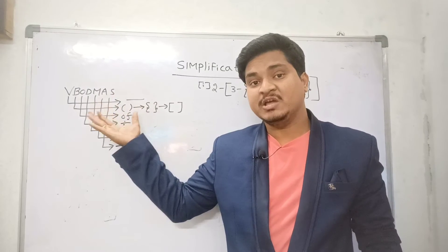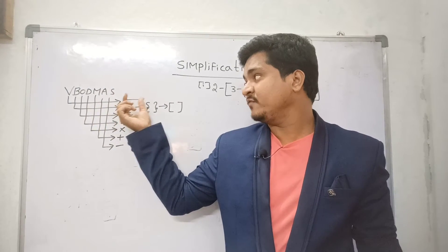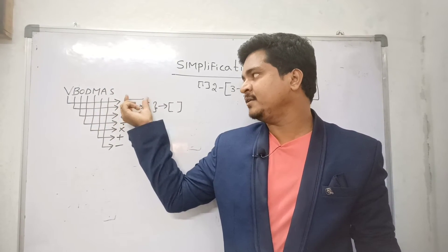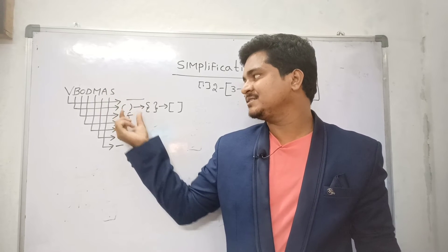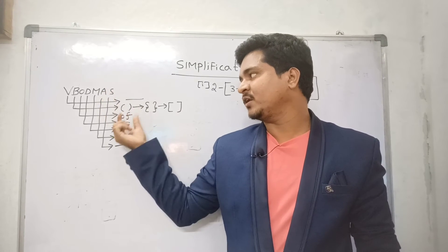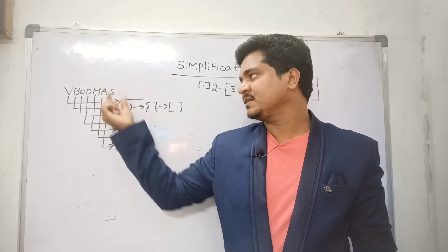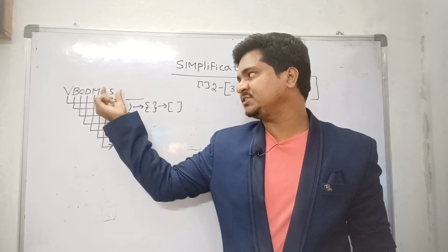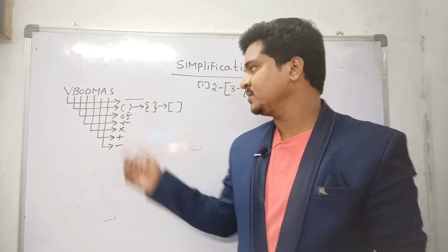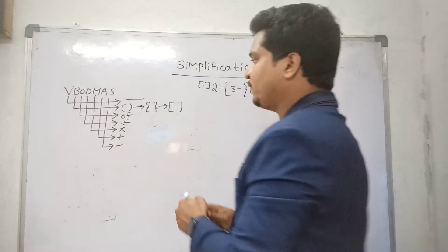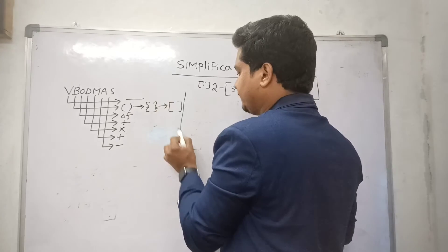Next is the full VBODMAS rule. V for vinculum or bar, B for brackets, O for of, D for division, M for multiplication, A for addition, S for subtraction. We need to follow step by step.